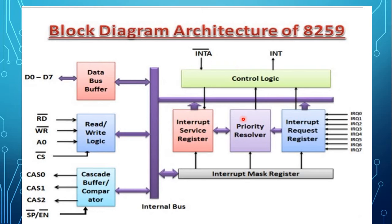The fourth block is the interrupt request register IRR. It has 8 input lines from IR0 to IR7 for interrupts. When these lines go high, the requests are stored in the register. The interrupt mask register IMR is a programmable register that stores the masking bits of the interrupt lines to be masked. This register can be programmed by an operational command word OCW.